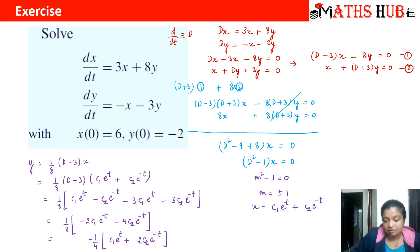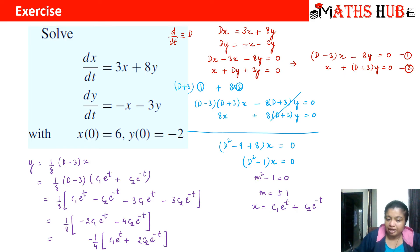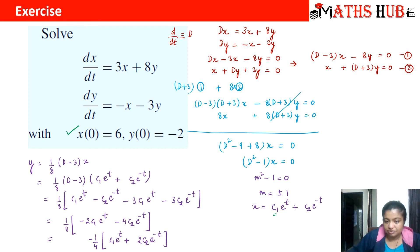We have solved simultaneously to get the values of x and y by the elimination method. Now we are given initial conditions: x(0) = 6 and y(0) = −2. This means we need to calculate the values of the constants c₁ and c₂.